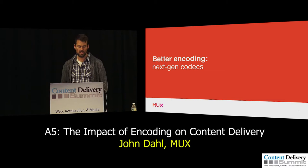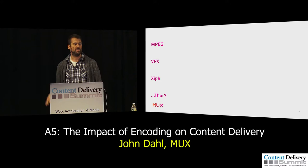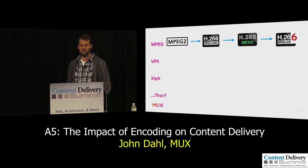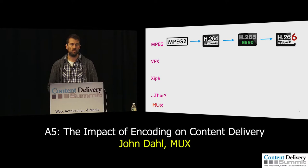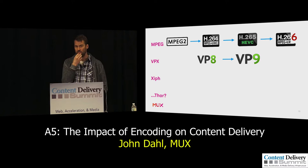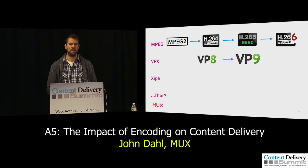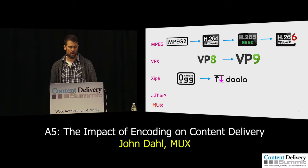Better encoding with next-gen codecs. A quick codec genealogy — a lot of this you probably already know. The dominant codec compression tree today is the MPEG tree: MPEG-2, H.264, HEVC. Most video in the world is encoded using this technology tree. Then there's the VPX tree — VP8 and VP9 are both used in the wild today, used very widely by YouTube. There's also the Xiph codec tree, Theora and Daala, which I think forked out of the VPX tree back around VP3 and has kind of gone its own way.